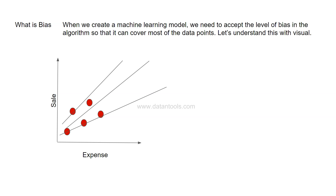This is basically what we call bias. Bias is the distance from the line to the data points, and we need to reduce the bias by finding the best-fit line or best-fit model that represents all the data points with minimum bias.